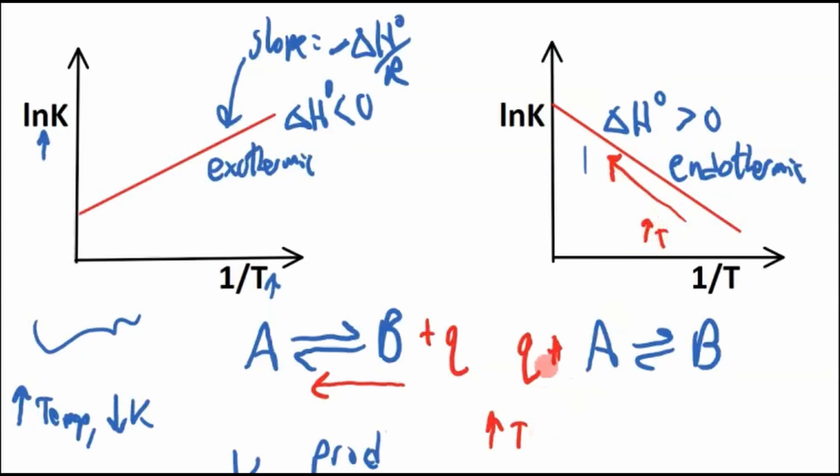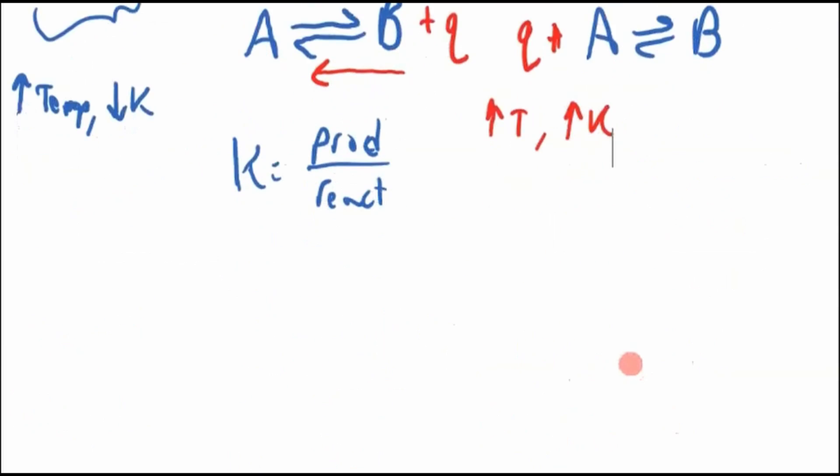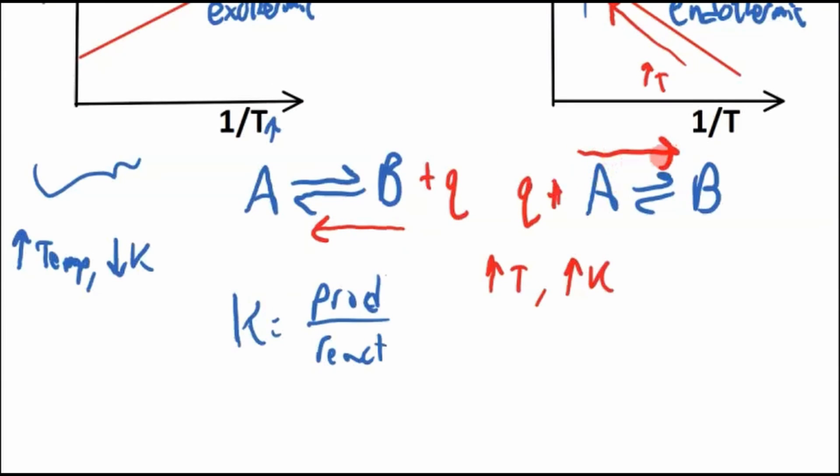If we increase the temperature, ln K goes up, which means we increase the equilibrium constant, which means we shift this to the right.